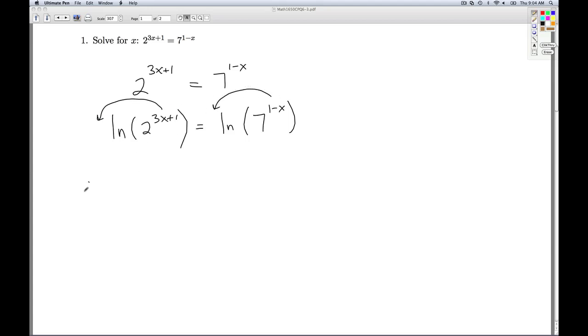We're going to get 3x plus 1, that entire exponent times the natural log of 2, equals 1 minus x, that exponent times the natural log of 7. And we go ahead and distribute the natural log of 2. Remember, the natural log of 2 is a real number, so we distribute it just like we would any other real number. So 3x natural log of 2 plus the natural log of 2, and we distribute the natural log of 7 minus x natural log of 7.